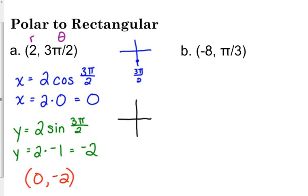If you think about it, we just graphed the polar: 3π/2 is right here, and a radius of 2 puts it right here. Rectangularly, that's on the y-axis, so the x coordinate is 0, and it's at the point negative 2.